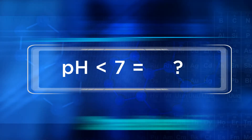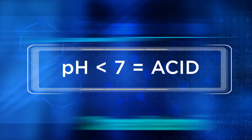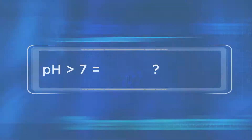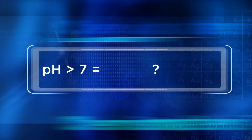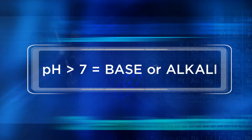So let's double check and make sure we remember what those numbers mean. If a water sample is measured at a pH lower than seven on the pH scale, what do we call that solution? It's an acid. Right. And if a water sample is measured at a pH higher than seven, what do we call that solution? That would be a base or an alkali. Right. Nice job.